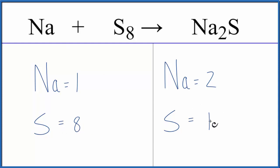We have eight here and one here so put a coefficient of 8 in front of the Na2S. 1 sulfur times the 8 that gives us 8 sulfurs so the sulfur atoms are balanced. Then 2 times the 8 for this sodium gives us 16 sodium atoms.